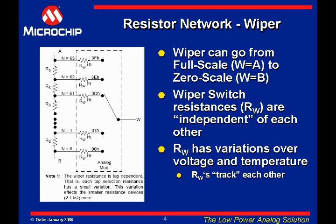Looking at wiper resistance with respect to voltage: within a voltage range, the change in resistance will be linear relative to the change in device voltage. At some voltage level, as the voltage decreases, the resistance characteristics of the switches will become nonlinear and the resistance will increase exponentially.